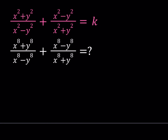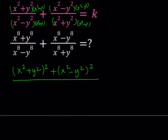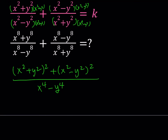The first thing I'm going to do is make a common denominator. Basically, I'm going to be multiplying this by that and that by this. We need to multiply both the top and bottom by x² + y², and also by x² - y². The numerators will be perfect squares. So we get (x² + y²)² + (x² - y²)², all divided by the product of those two expressions, which by difference of two squares gives us x⁴ - y⁴.